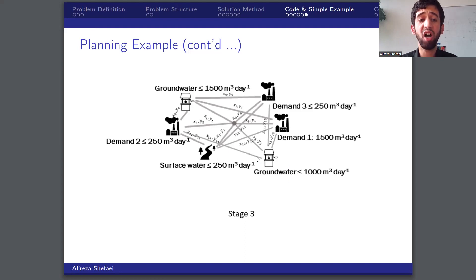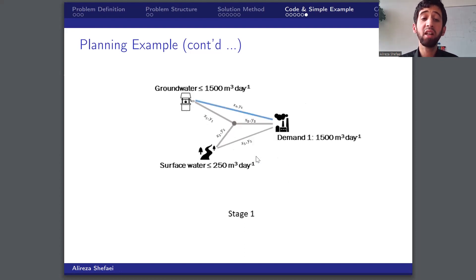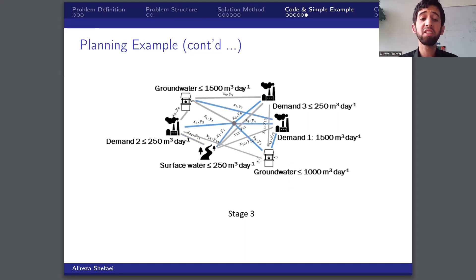So after the application of our MSSP algorithm, we found out that it is just required to choose the blue pipelines from the available options to meet the demand and satisfy the network constraints in each stage. Also, in the third stage, we only need to build seven from the 15 pipelines.